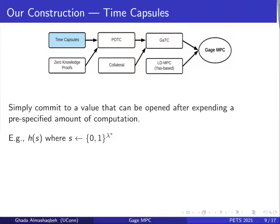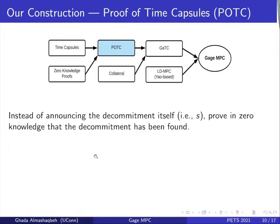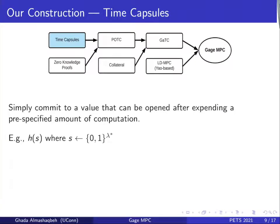We start with a time capsule, which is basically committing to a value that can be opened after expending a pre-specified amount of computation. For example, I can commit to a value S by publishing its hash on the blockchain, and to open it, anyone will brute-force the pre-image domain of this hash function until she finds the pre-image S. The longer the seed value S, the harder — or the larger — is the amount of computation needed in the opening process. This is essentially what bounty hunters are doing in Gage MPC: the input labels are committed in time capsules, and if P0 doesn't come back to open them, the bounty hunters will brute-force the opening and allow finalizing the computation.